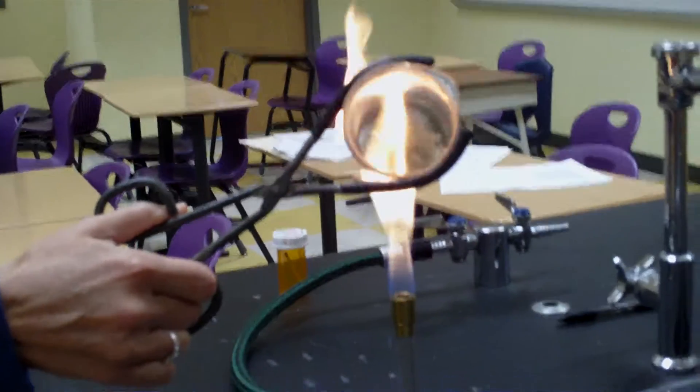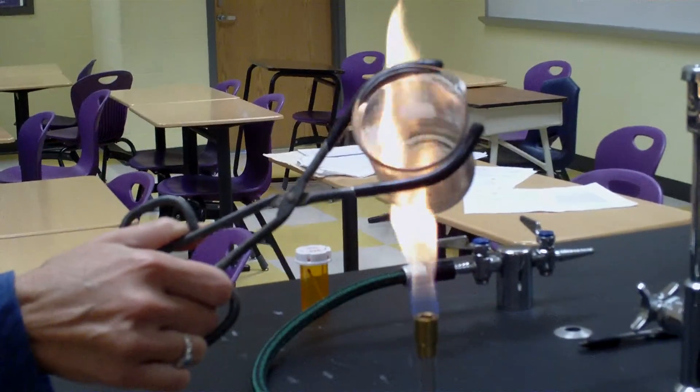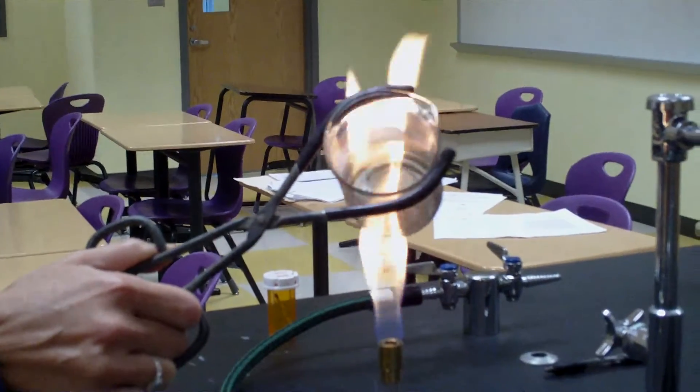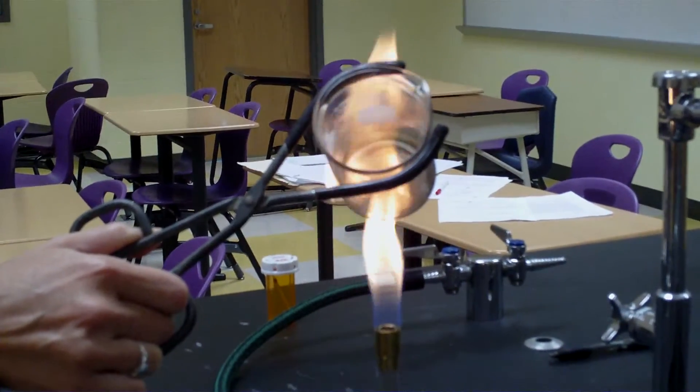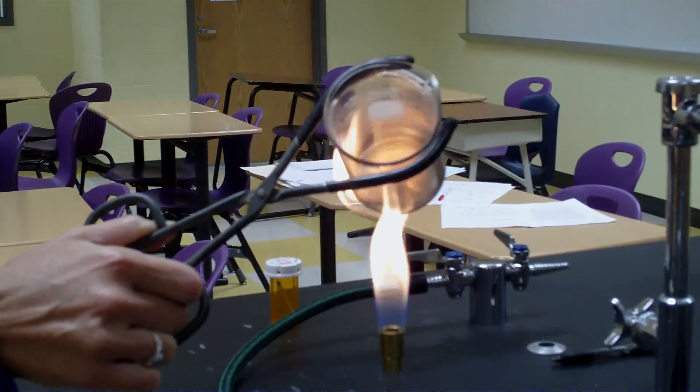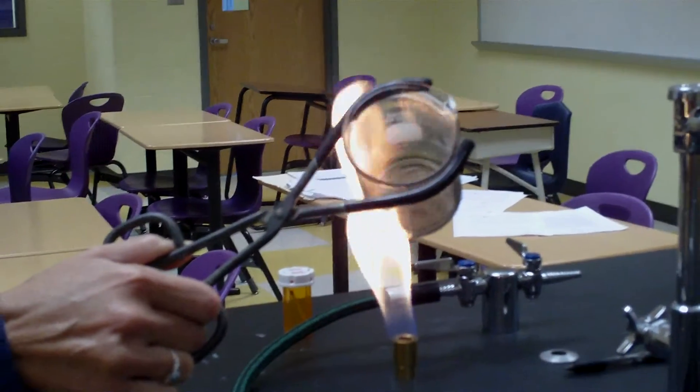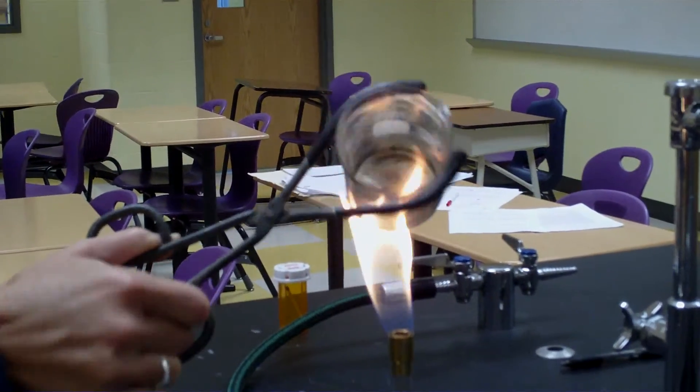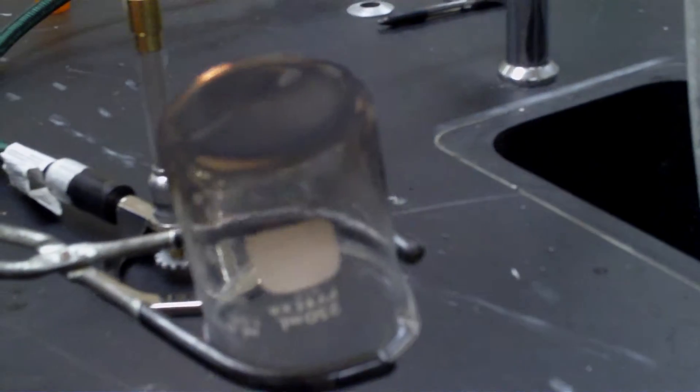Use beaker tongs to hold the beaker in the flame. You can see a black substance forming on the bottom.